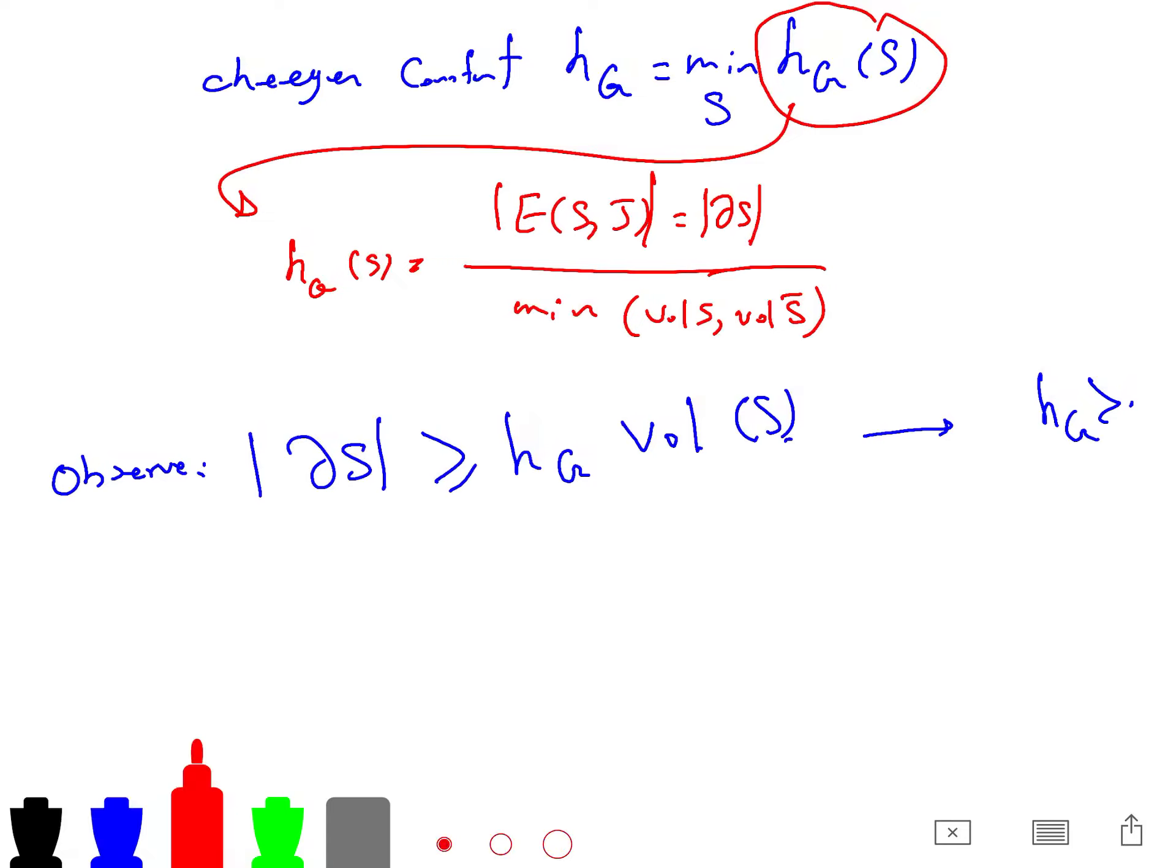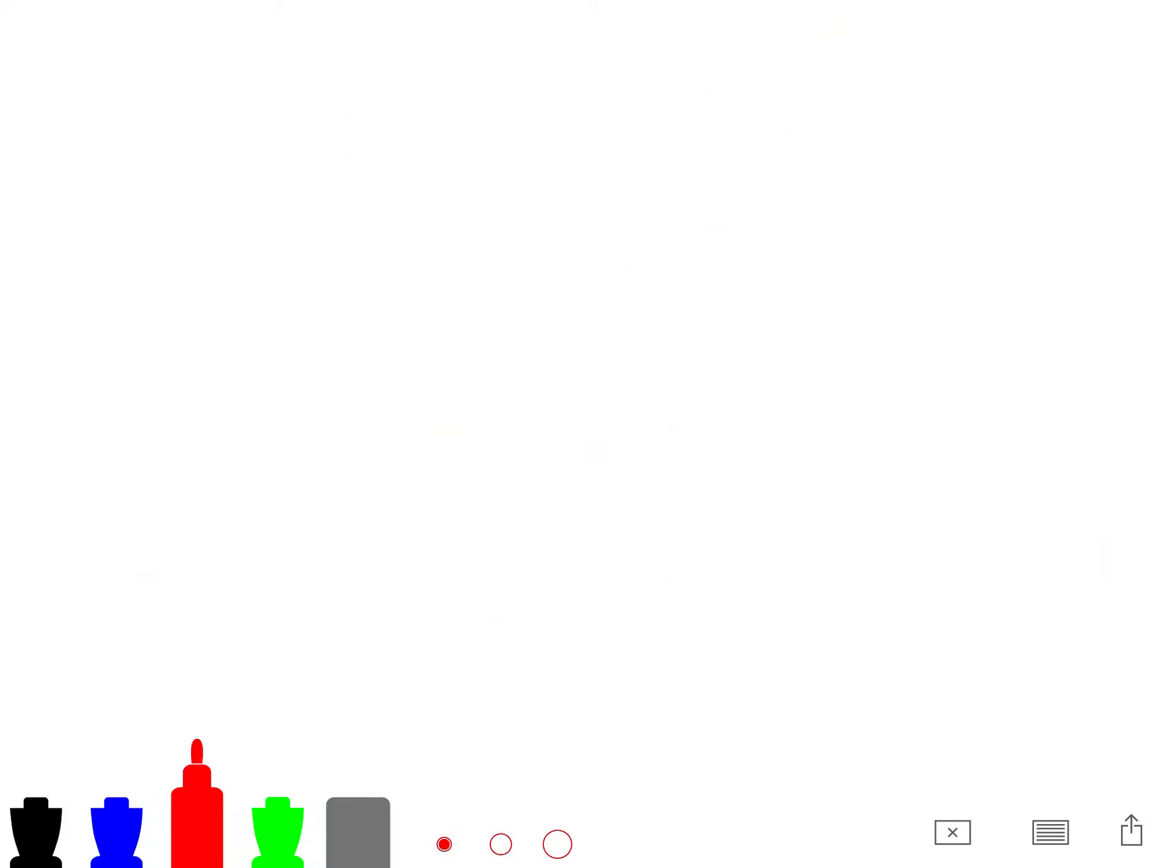Similarly, for vertex expansion, so that was edge expansion. Now, for vertex expansion, you could imagine similar things. I mean, g(G) is minimum of g_G(S), and g_G(S) is the volume of your delta(S), divided by minimum of volume of S and volume of S complement.